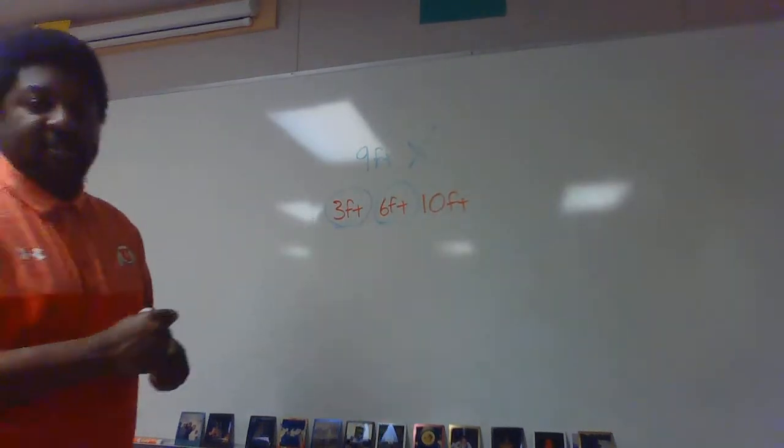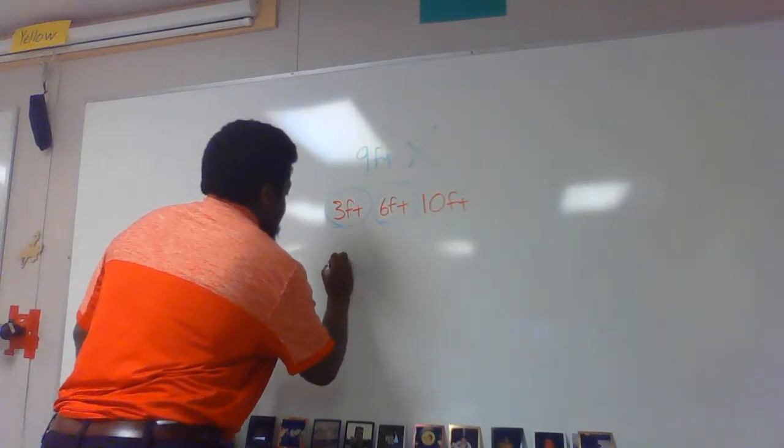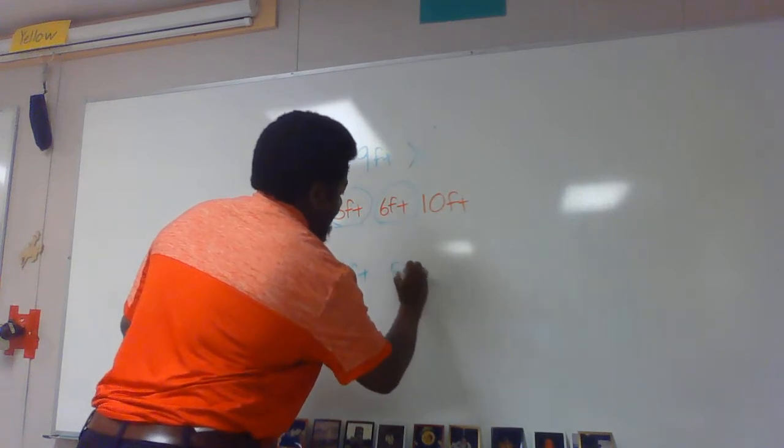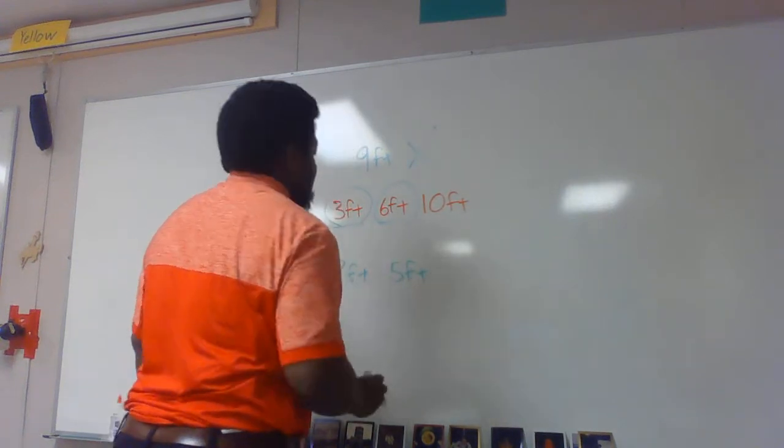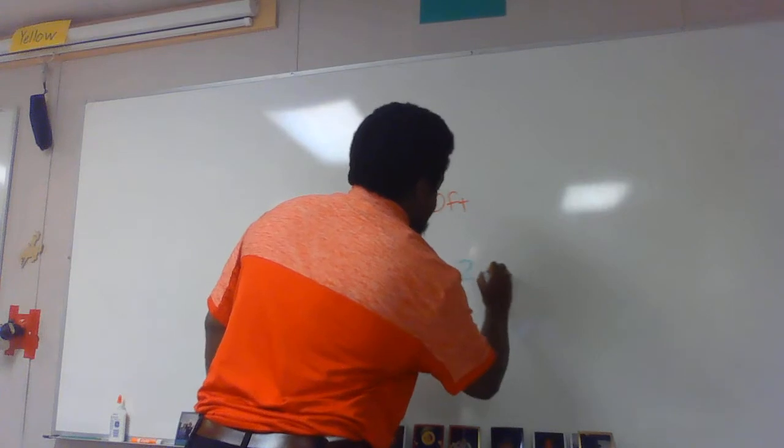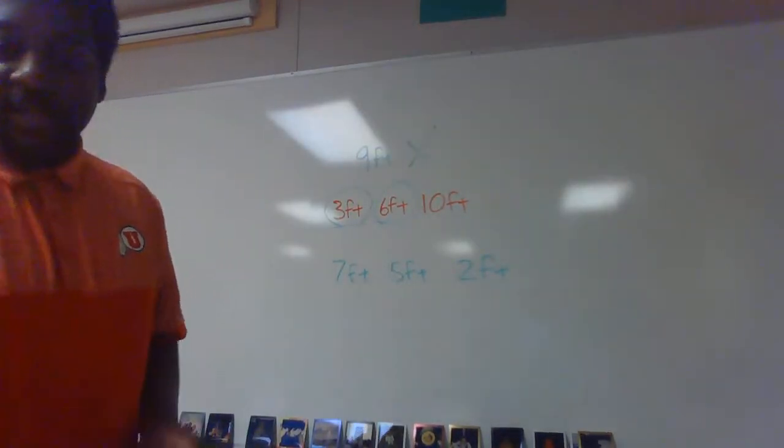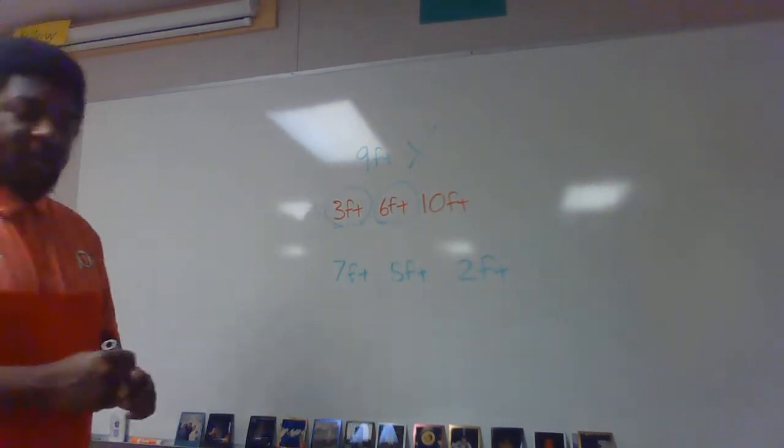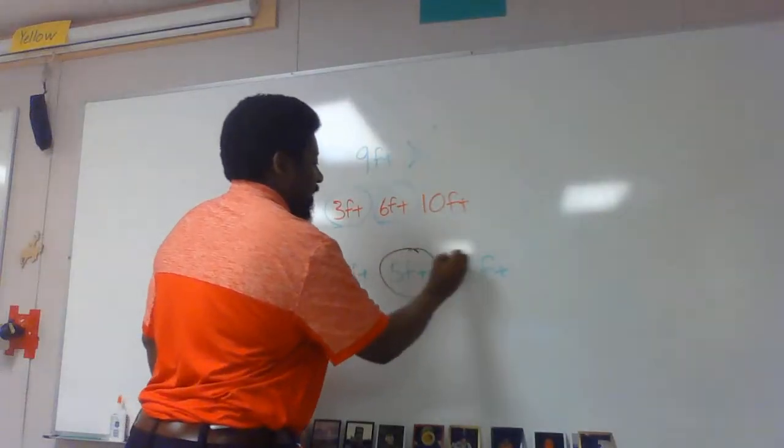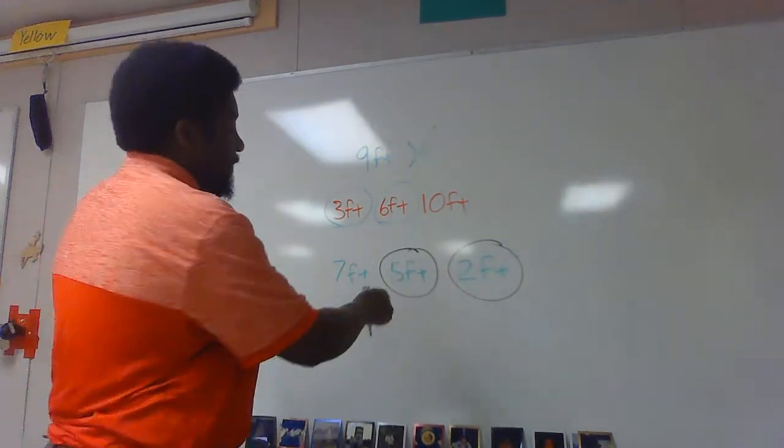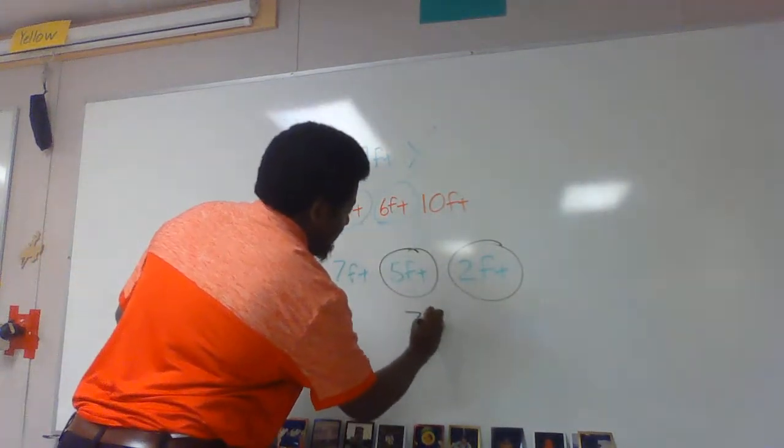What if I have the numbers 7 feet, 5 feet, and 2 feet? The smallest two numbers here are 5 feet and 2 feet. 5 plus 2 gives me 7 feet. This is where some people get confused.